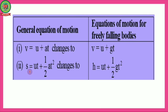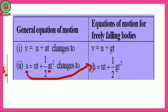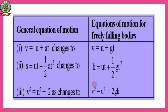The second equation is s = ut + ½at². For free fall, 'a' changes to 'g' and displacement 's' becomes height 'h', giving: h = ut + ½gt². The third equation is v² = u² + 2as, which changes to: v² = u² + 2gh. These are the three equations of motion for freely falling bodies.